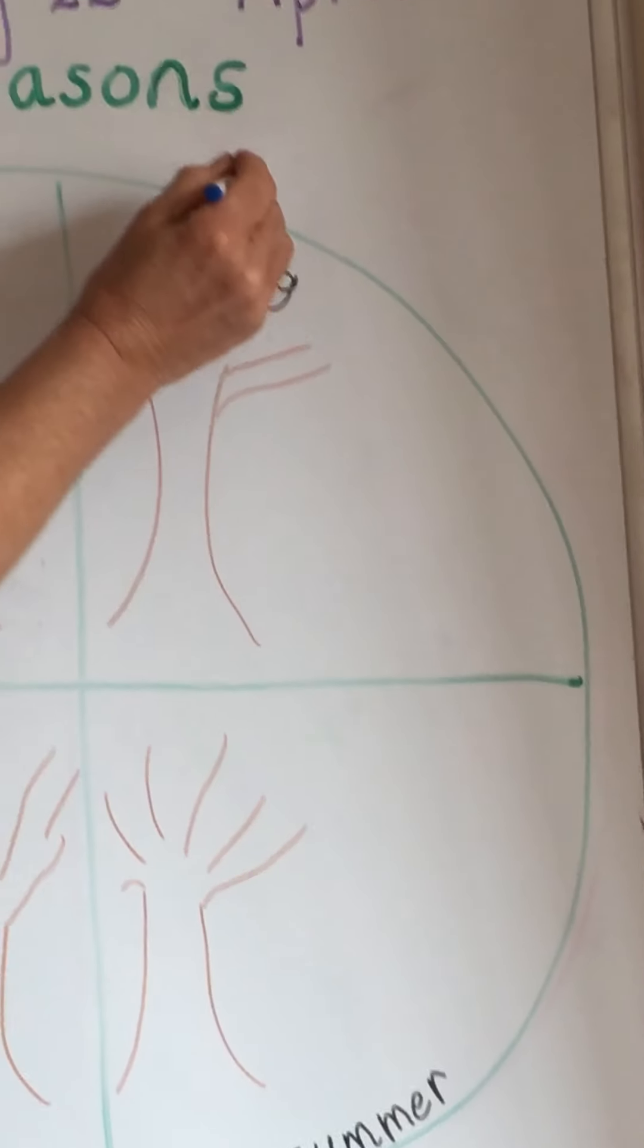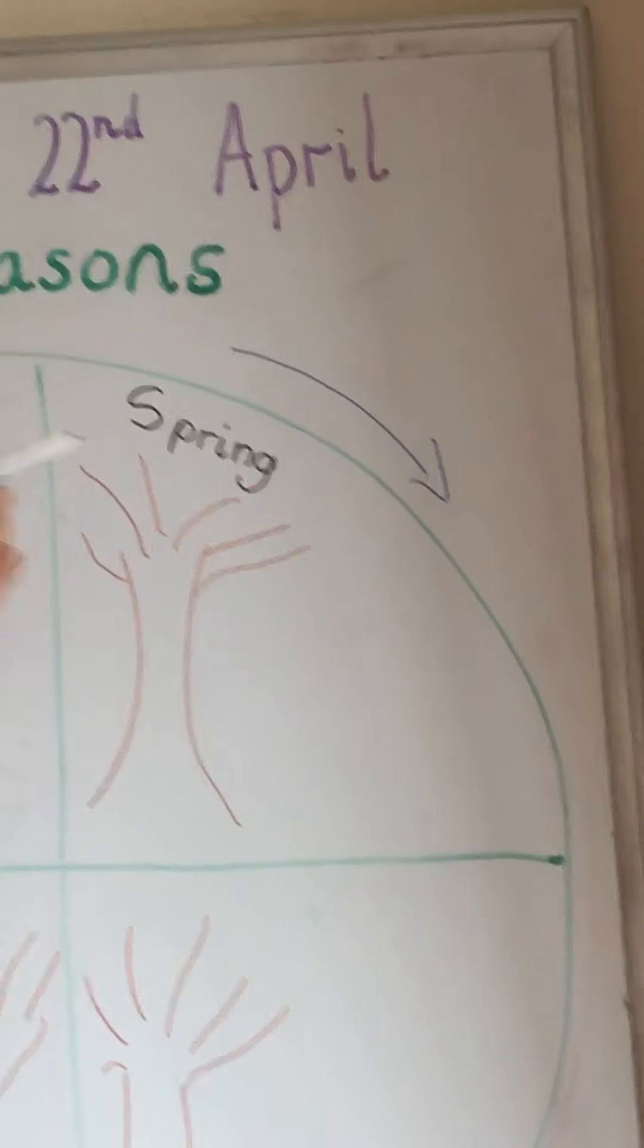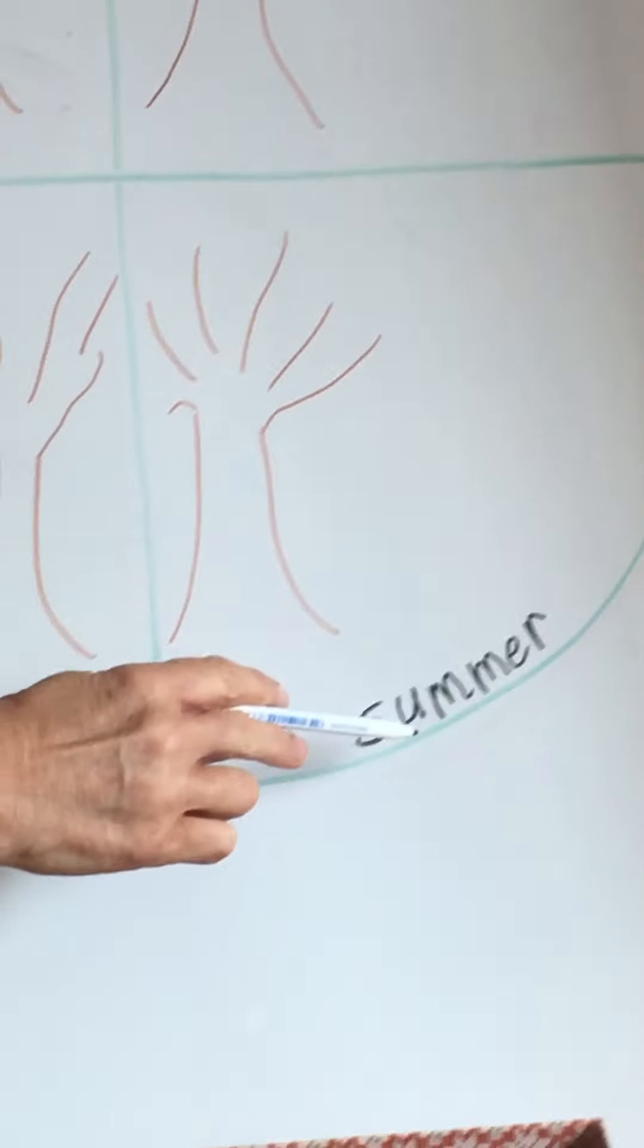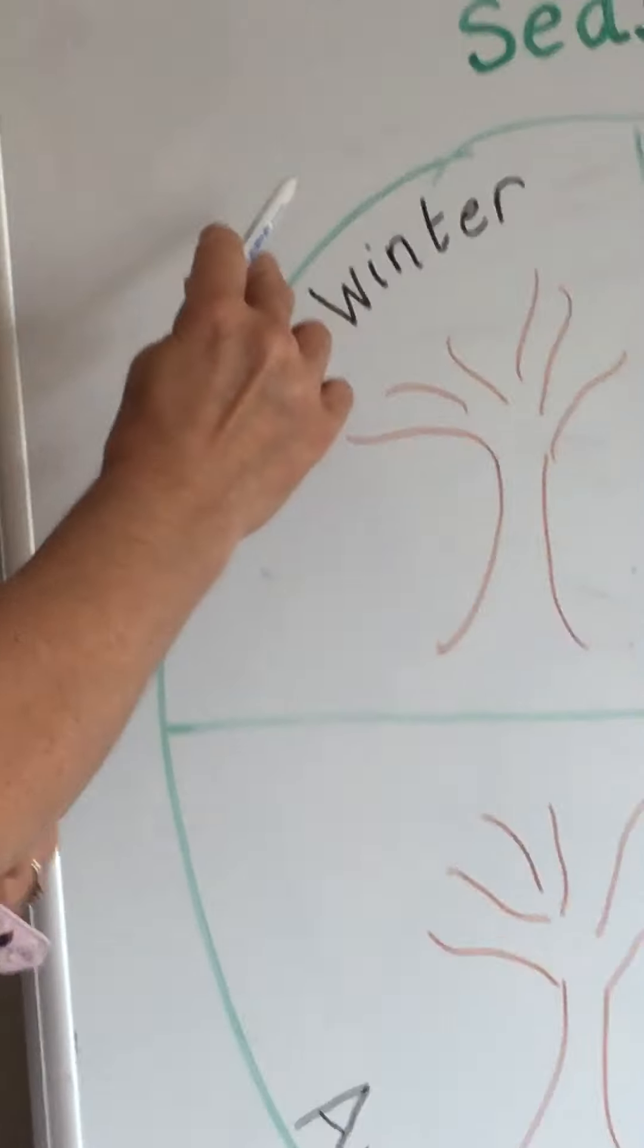We'll work clockwise around the wheel, starting with spring. So spring goes to summer, goes to autumn, which goes to winter, then of course back to spring.